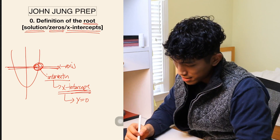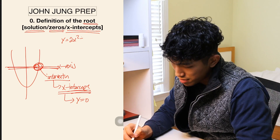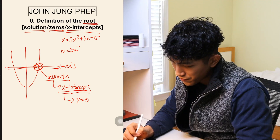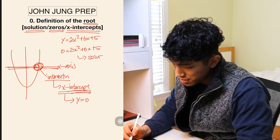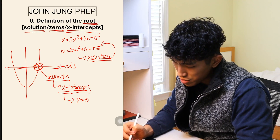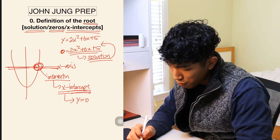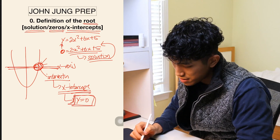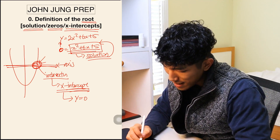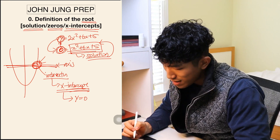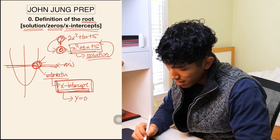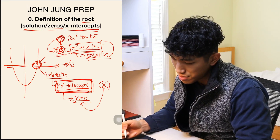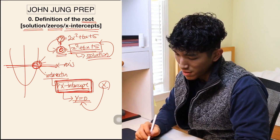One popular thing the SAT does is give you an equation like y = 2x² + 6x + 5 and ask you to find when y is equal to zero. A solution is something that makes the equation true. Whenever the equation is set equal to zero, that means your y value equals zero, so you are looking for the x-intercepts. Find the x value that makes y equal to zero — that's the definition of a root.